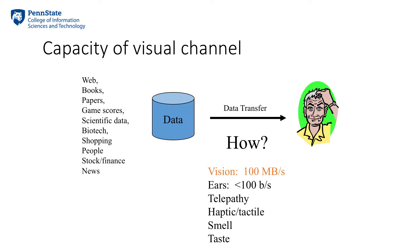We know that we can perceive graphical information much faster than textual information. However, if I ask you how much faster it could be, you may or may not be able to answer that question. There is a lot of scientific research on human visual systems trying to answer that question. The findings from cognitive and psychological studies is that human visual perception has a capacity about a million times higher than any other perceptual systems.